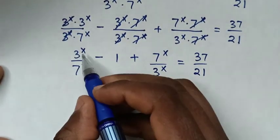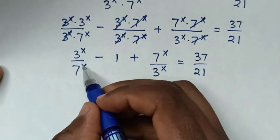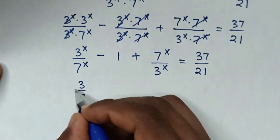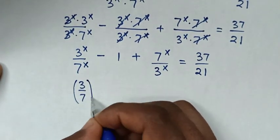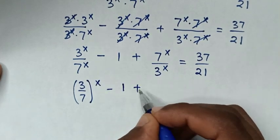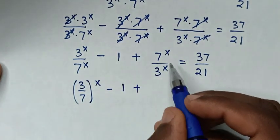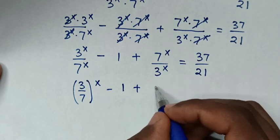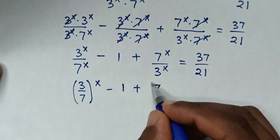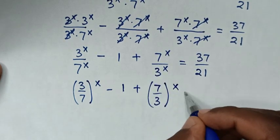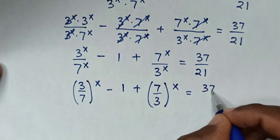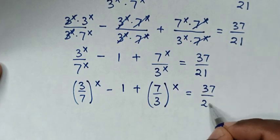Then in the next step, here the power of x is common, so it becomes (3/7)^x, then minus 1, plus also here the power of x is common, so it becomes (7/3)^x, is equal to 37 over 21.